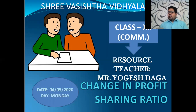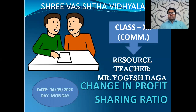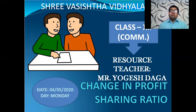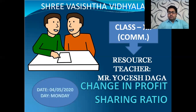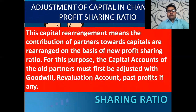Once there is a change in profit sharing ratio, partners also decide to change their capital. Suppose A, B, and C are partners having capital of ₹50,000, ₹50,000, and ₹1 lakh. But due to the change in profit sharing ratio, the partners decide to change their capital to ₹70,000, ₹70,000, and ₹80,000. A and B must each bring in ₹20,000 more, while C, whose capital was ₹1 lakh, is to be given back ₹20,000 as extra money. This is the topic of adjustment of capital.